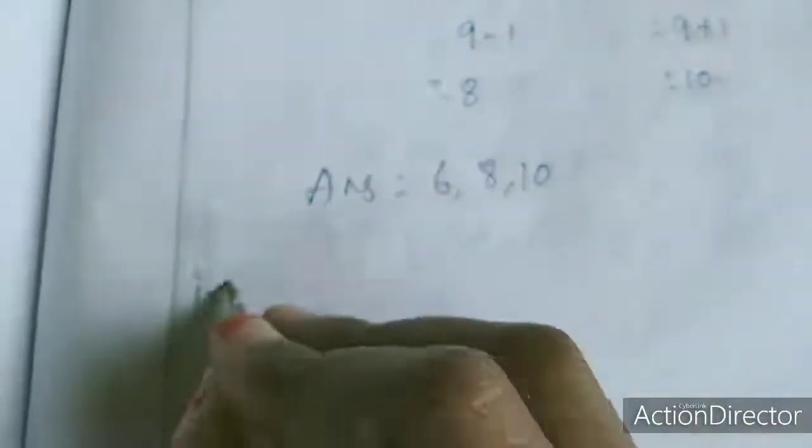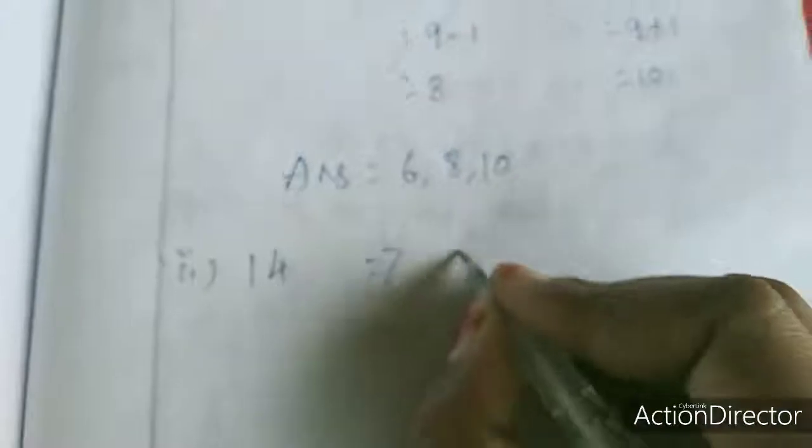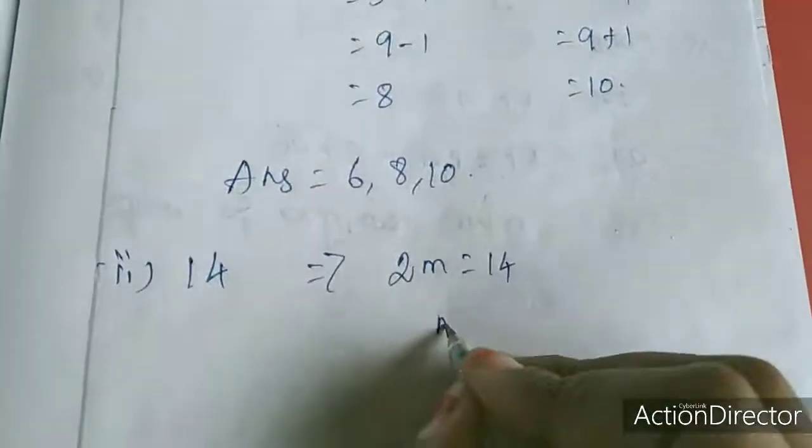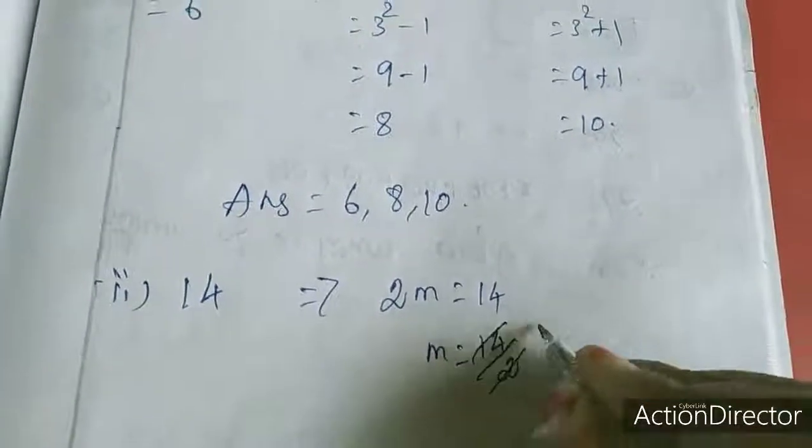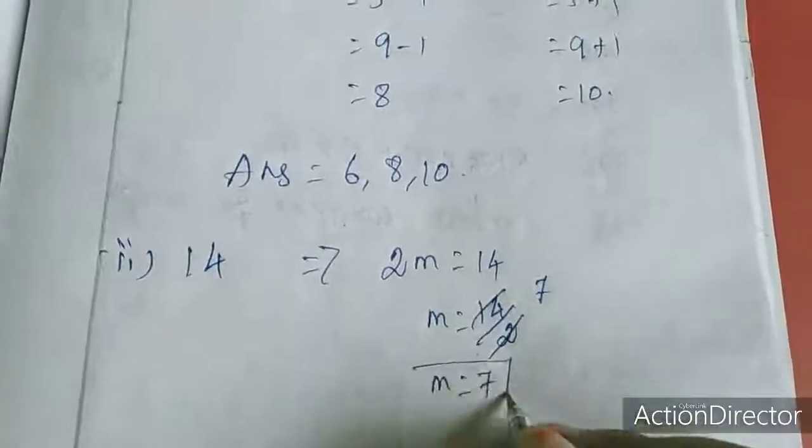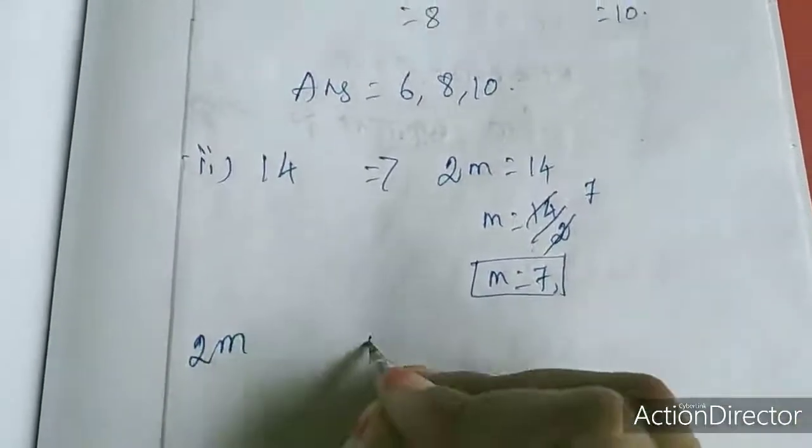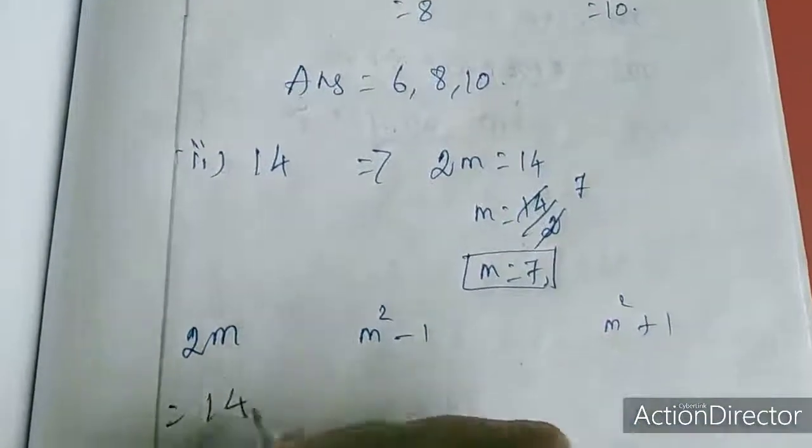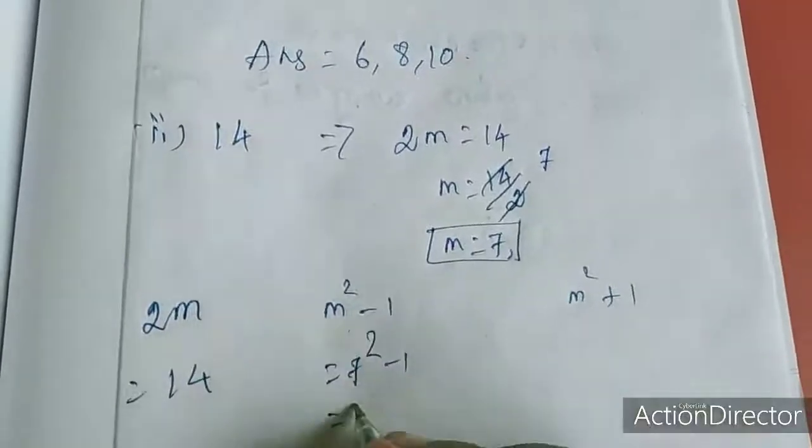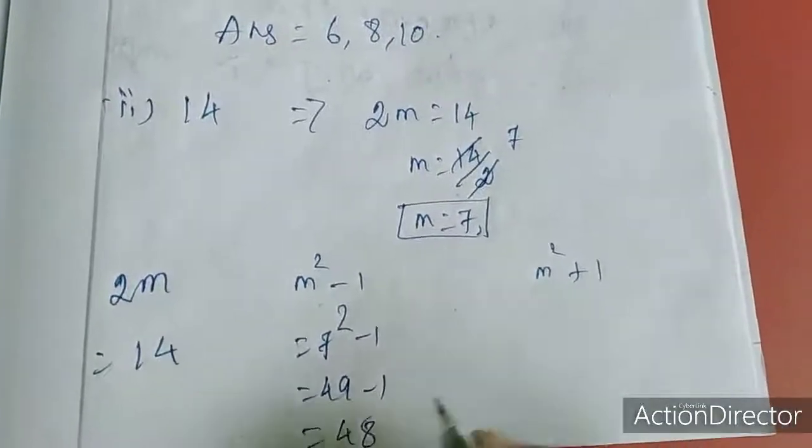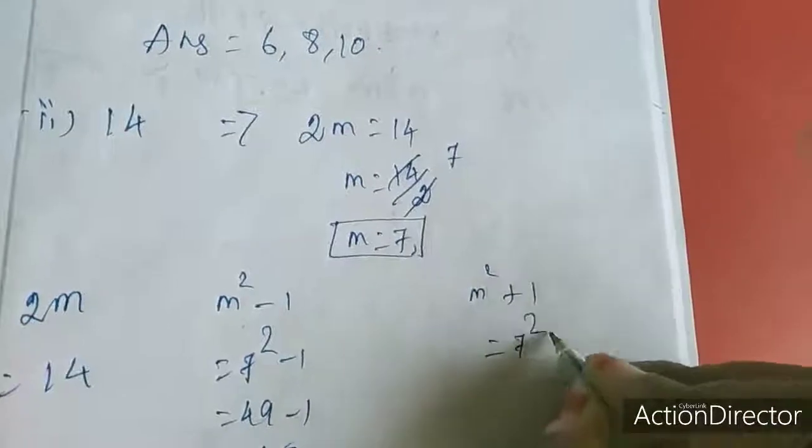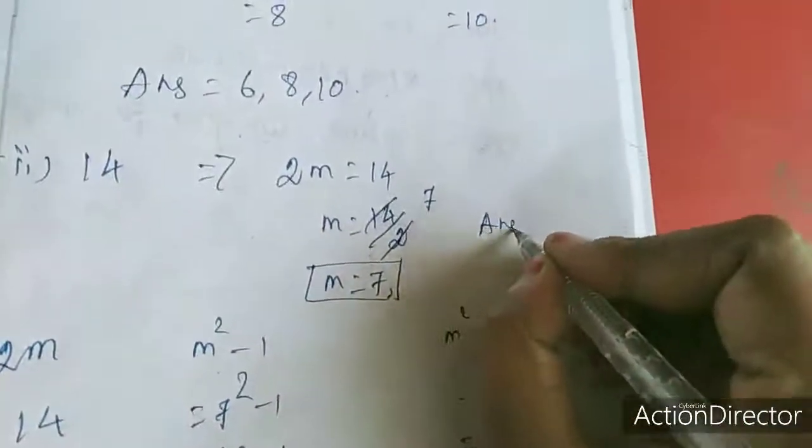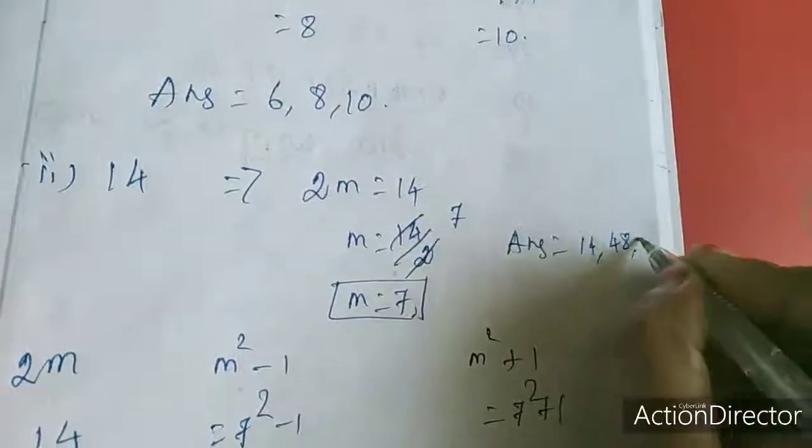Second sum is 14, which implies 2m equal to 14, so m equal to 14 by 2, we will get 7. M equal to 7. What we want to find out? 2m, m squared minus 1, m squared plus 1. So 2m is 14. Here 7 squared minus 1, 49 minus 1, that is 48. Here 7 squared plus 1, 49 plus 1, that is 50. So answer equal to 14, 48, 50.